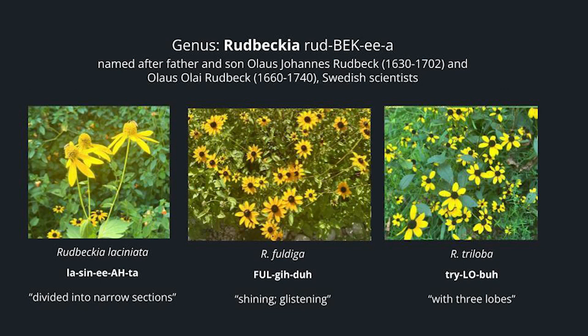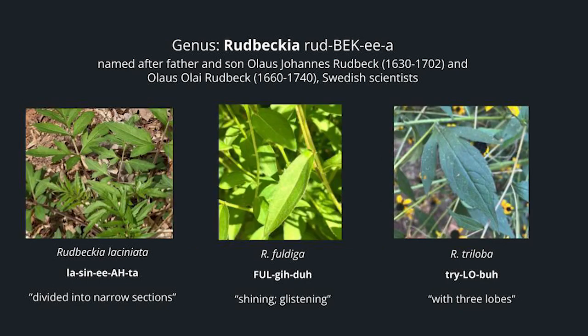The genus Rudbeckia is named after father and son Olaus Johannes Rudbeck and Olaus Olai Rudbeck, Swedish scientists. A Rudbeckia with leaves divided into narrow sections would be Rudbeckia laciniata. A Rudbeckia with shining and glistening flowers is Rudbeckia fulgida. And if a Rudbeckia has leaves with three lobes, that would be Rudbeckia triloba. You can see the leaves of all three species — on the laciniata, how the leaves are divided into small sections, and on the triloba, though not all leaves will have three lobes, you will definitely find some with three distinctive lobes.